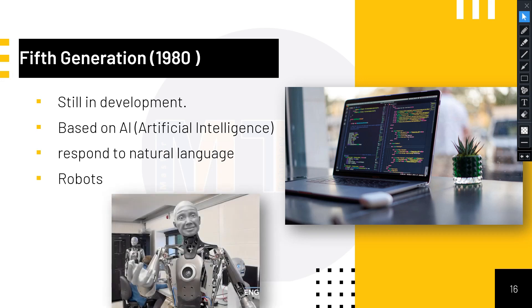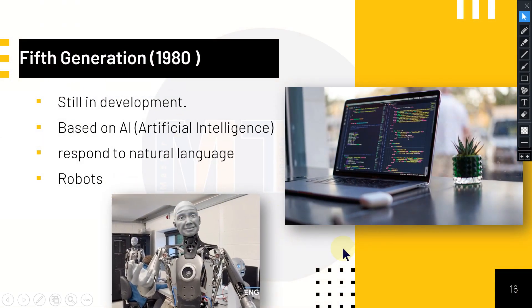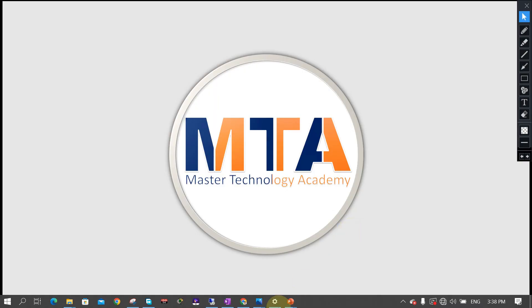The fifth generation also includes robotics. Robots are electronic machines that have memory and can respond to commands. That covers all five generations of computers — from the first generation to the fifth — and the fifth generation is still in development. Thank you very much, I'll see you next time. Goodbye.